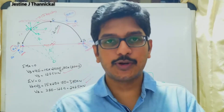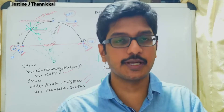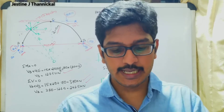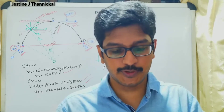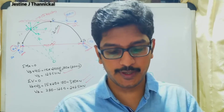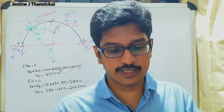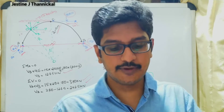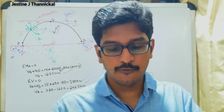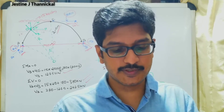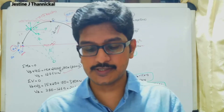A three-hinged circular arch, hinged at the springing and crown points, has a span of 40 meters and a central rise of 10 meters. It carries a uniformly distributed load of 15 kilo Newton per meter over the left half of the span, together with a concentrated load of 70 kilo Newton at the right quarter span point. Find the reactions at the supports, normal thrust, and the shear at a section 10 meters from the left support.